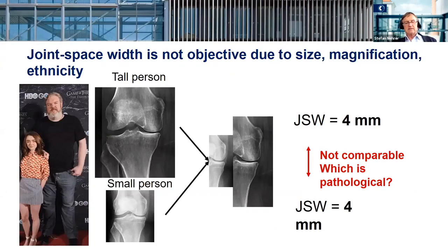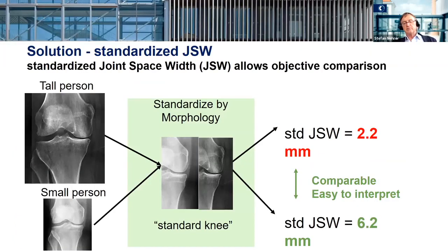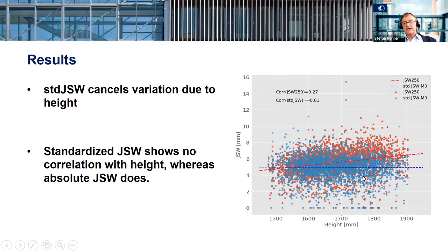For instance, with joint space: here you see two persons where you assess the joint space. Both actually have four millimeters of joint space. But the bigger person with four millimeters already has OA, while the smaller person does not. So we cannot take absolute values of joint space — we have to compare, especially when it comes to disease progression. When you normalize to height, the big guy scores 2.2 and the smaller person 6.2. This normalized joint space, with big data, allows the computer to compare relative to height for more comparable data.